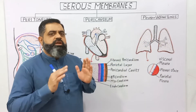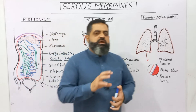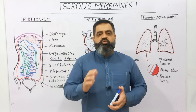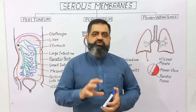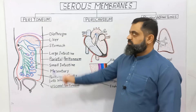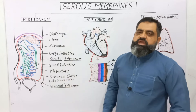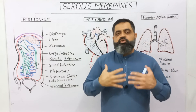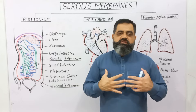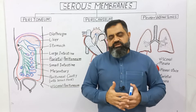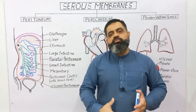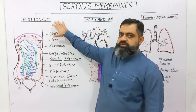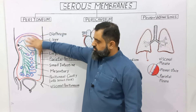Now let's discuss these serous membranes one by one in detail. First, I am going to describe the peritoneum. In our major body part known as the trunk, there are two major cavities: the thoracic cavity and the abdominal cavity. Peritoneum is a serous membrane which is present in the abdominal cavity of the body.